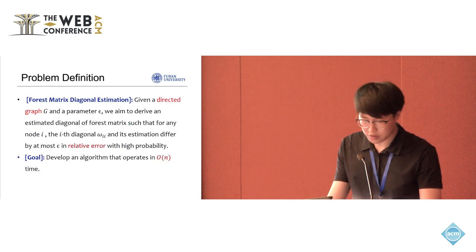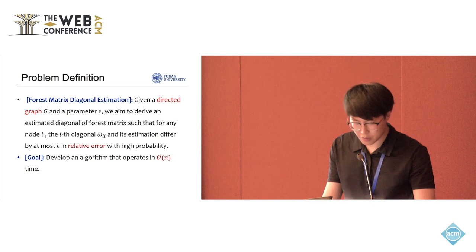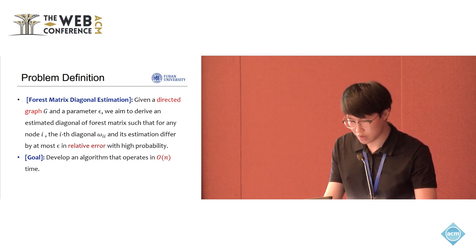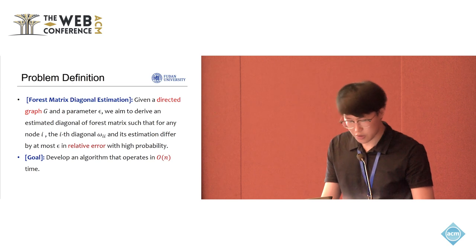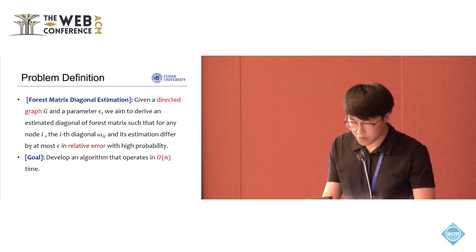Our paper focuses on the problem of efficiently estimating the diagonal elements of the forest matrix in directed graphs. Specifically, we aim to derive an estimation where the relative error does not exceed a small predefined threshold with high probability.